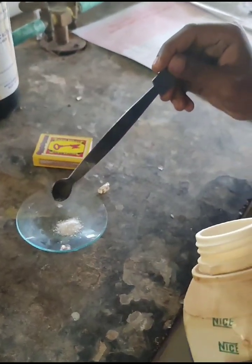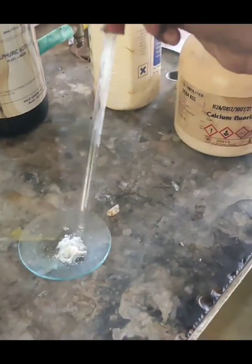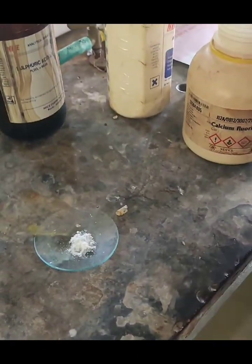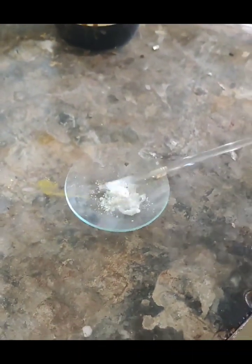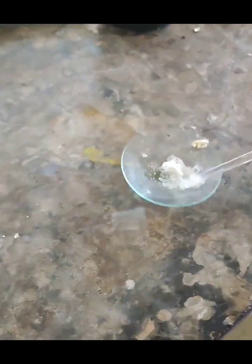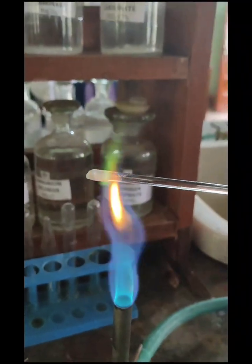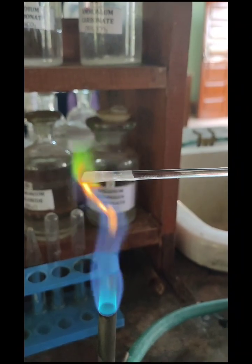For the borate test, take around 5 mg of salt. Add a small quantity of concentrated H2SO4 and thoroughly mix it. Form a paste using a glass rod, take the paste on the glass rod, and bring it close to the flame. As we can see the green color flame, the borate is present.